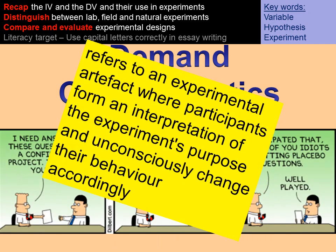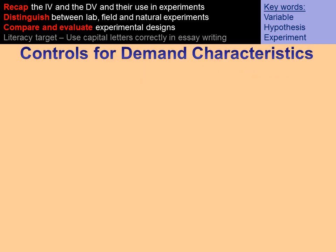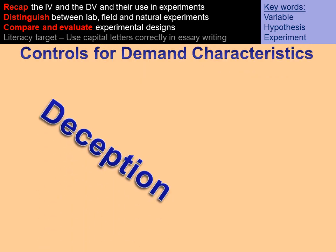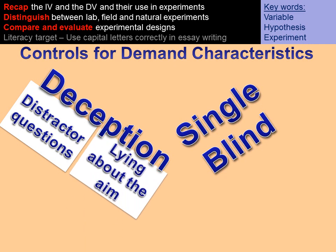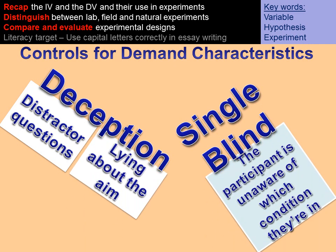Demand characteristics is where a participant forms an interpretation of the purpose of the experiment and changes their behavior accordingly — this might be unconscious. To control for demand characteristics you can use distractor questions, lie about the aim of the experiment as Milgram did, or use a single blind design where the participant is unaware of which condition they're in.